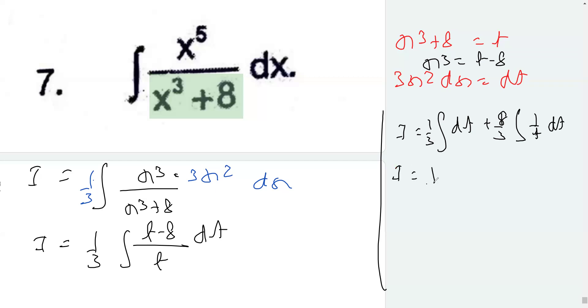So I equals 1 by 3. This is from here as t minus—sorry, plus 8 over 3. This is log mod t plus c.